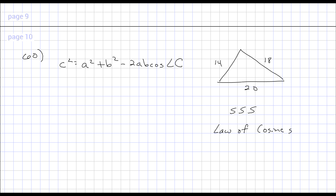Now you might recognize the first half of this almost, which is your Pythagorean formula: a squared plus b squared equals c squared. But that only applies to right triangles. By tacking on this last quantity, we can apply it to any triangle — it doesn't have to have a 90 degree angle in it.